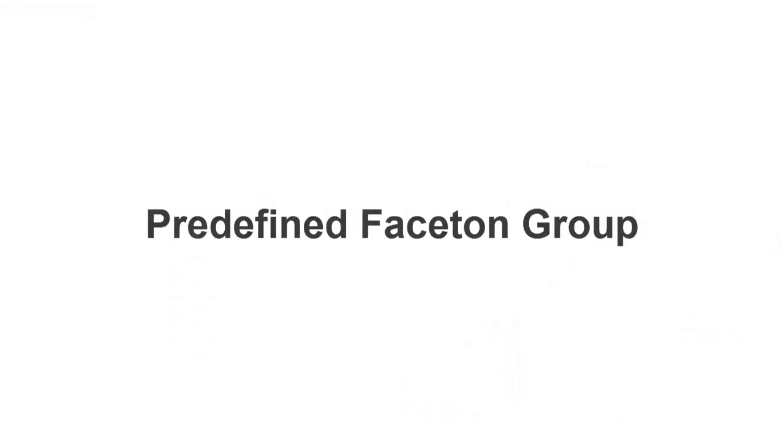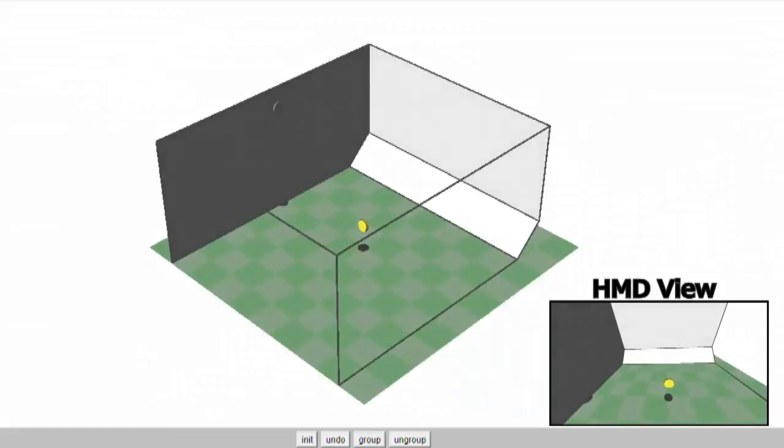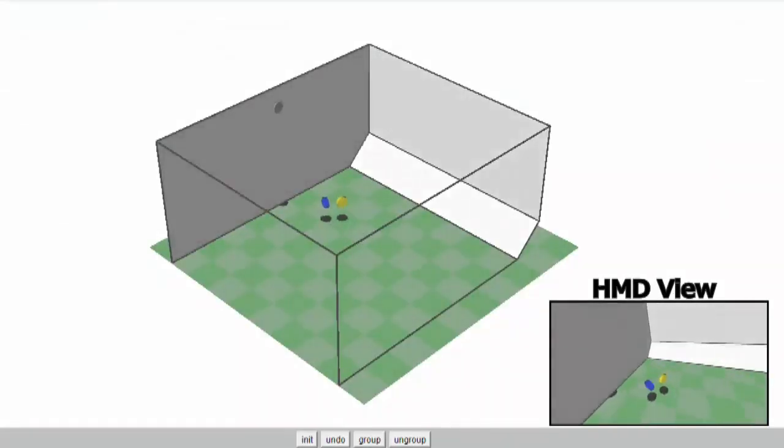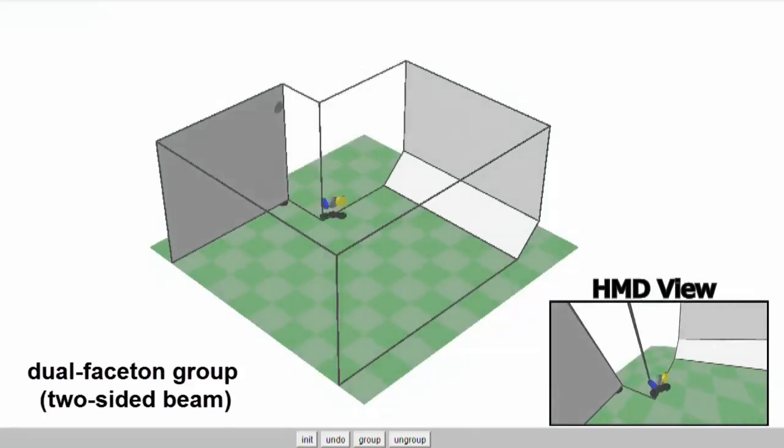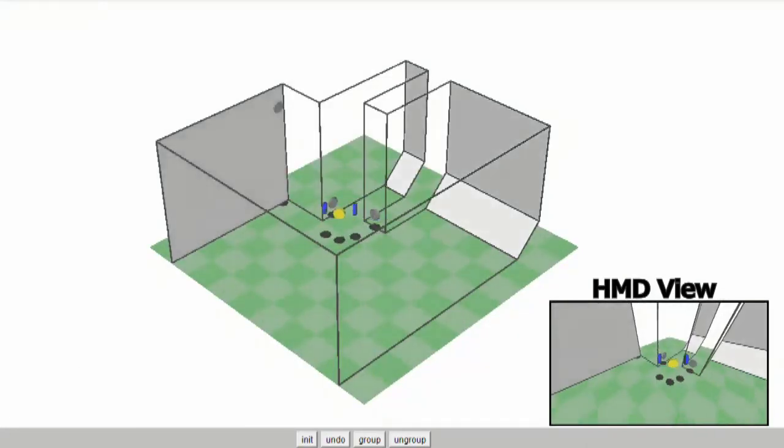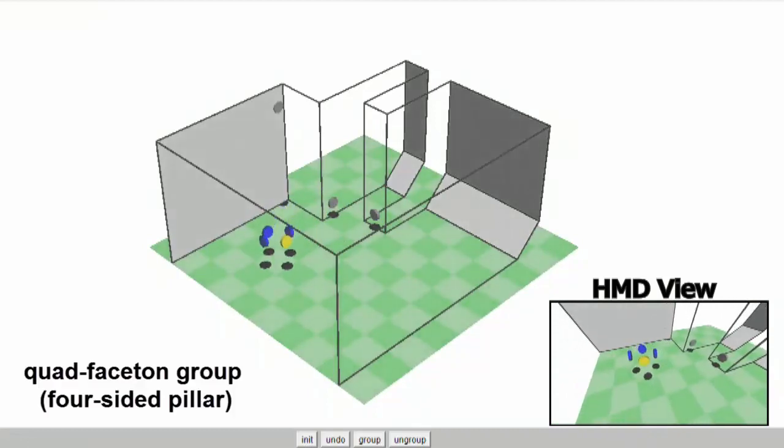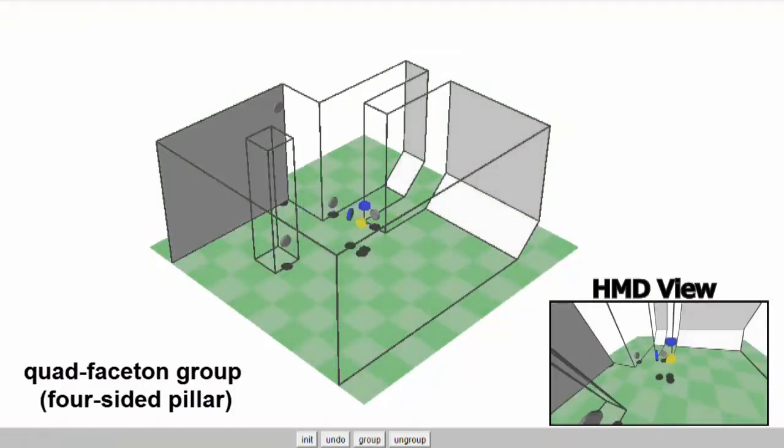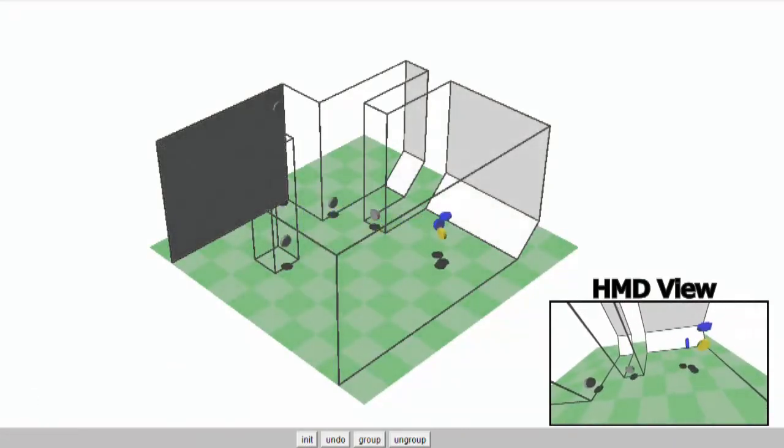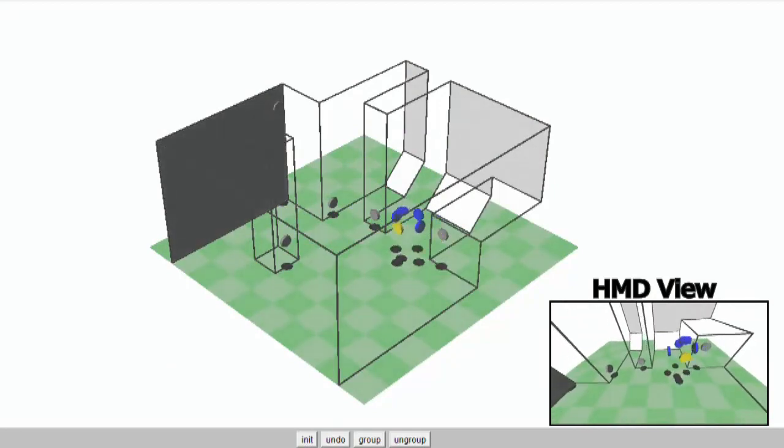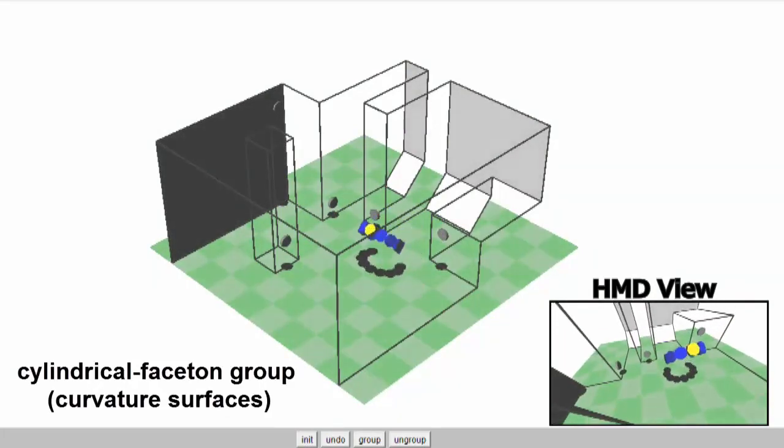To further accelerate the building process, we also provide several predefined Faceton groups. Some groups are designed for different kinds of beams and pillars, and some for approximating a curvature surface.